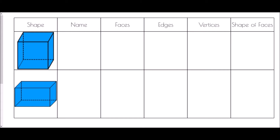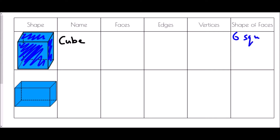The very first thing is we're going to look at the names of some 3D shapes. The first shape is a cube. The reason I know this is a cube is because of the faces — the faces are the flat surfaces of the shape. In this case there is a square on each side: a square here, a square here, a square at the back, at the side, and at the bottom — so the shape of the faces are six squares.